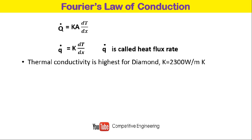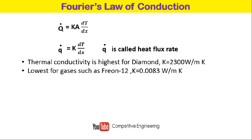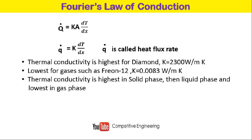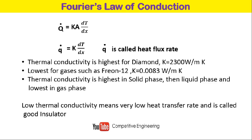Thermal conductivity is highest for diamond, with a value of 2300 W/m·K, and lowest for gases such as Freon-12, where K is 0.0083 W/m·K. Thermal conductivity is highest in the solid phase, then liquid phase, and lowest in the gas phase. Low thermal conductivity means a very low heat transfer rate and is characteristic of a good insulator. When we want to reduce heat loss from a body, we use good insulator materials such as brick, glass wool, and mineral wool.